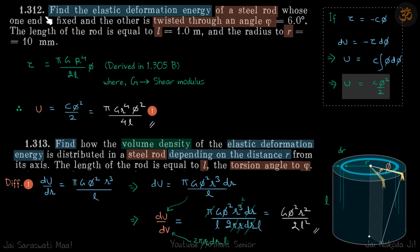In these two problems we need to find the elastic deformation energy when you twist a rod, given that it is twisted by an angle phi. When we twist a rod we use some torque, and that torque is proportional to phi — as we saw in problem 1.305 part B — where the torque comes out proportional to phi and C is the proportionality constant.